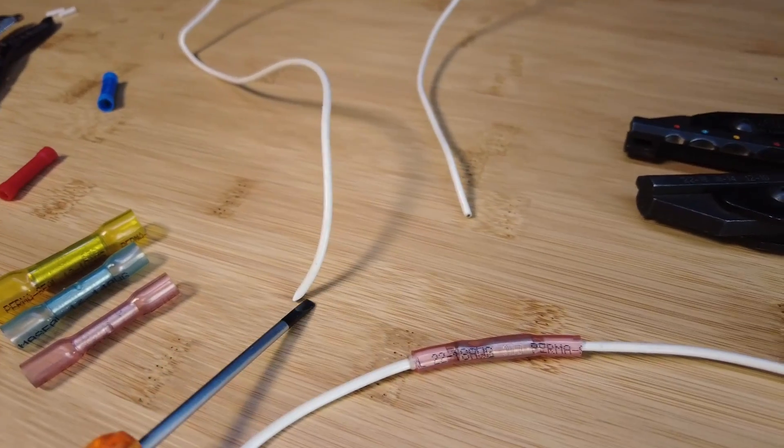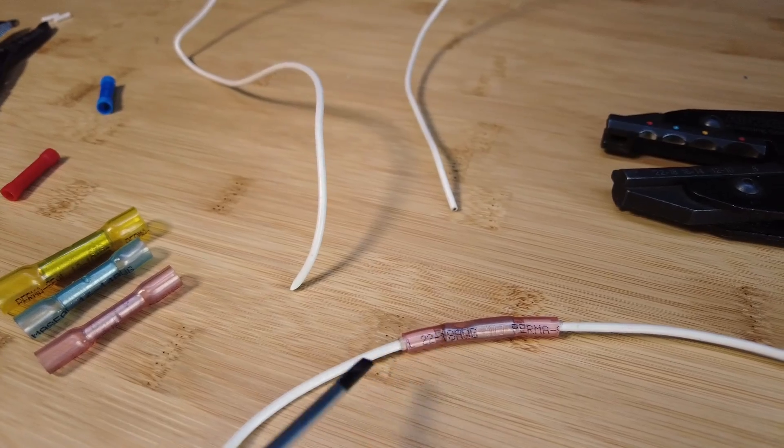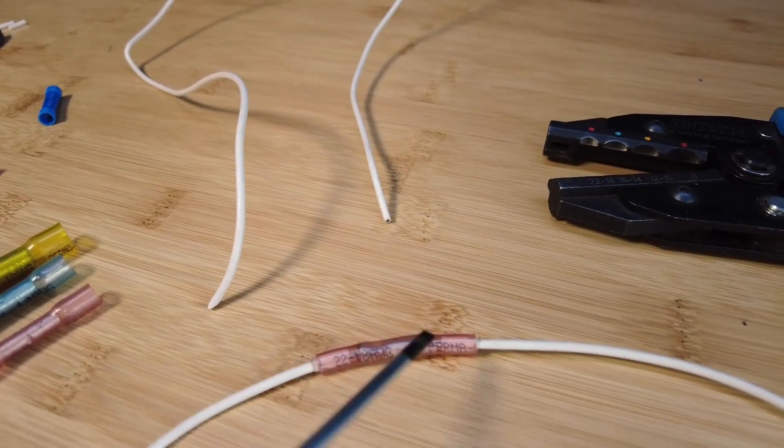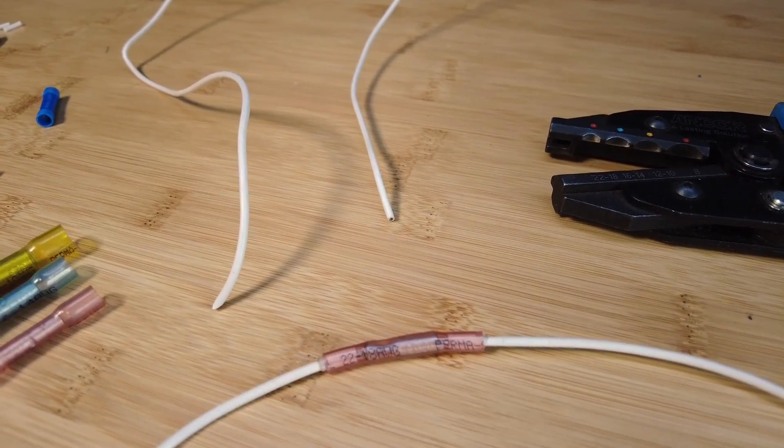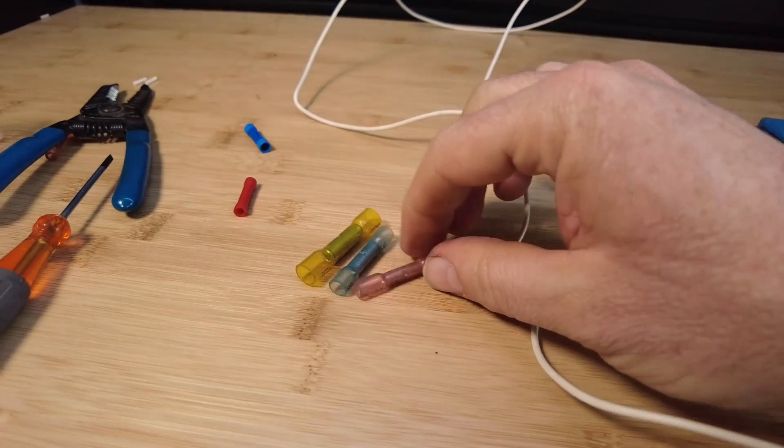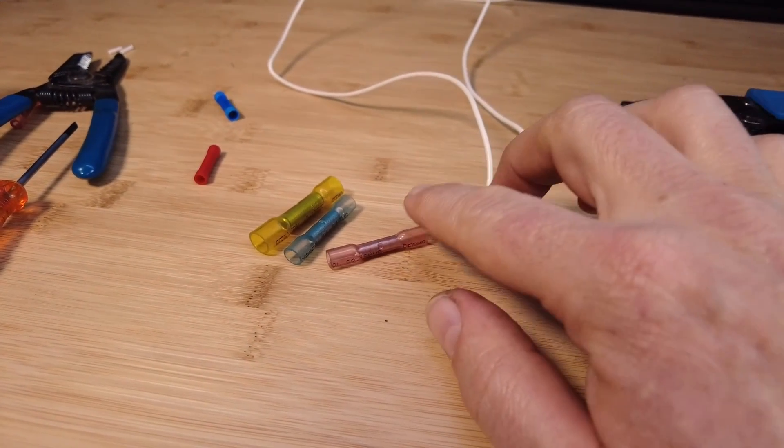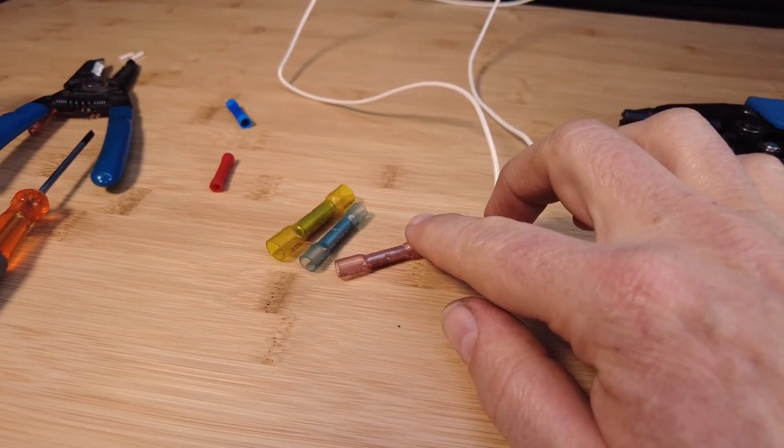So the goal is to get the two ends of two wires joined together with electrical continuity and permanency in the joint. So what tools are we going to need here? Of course, we're going to need our adhesive-lined heat shrink crimp connectors of the appropriate size.